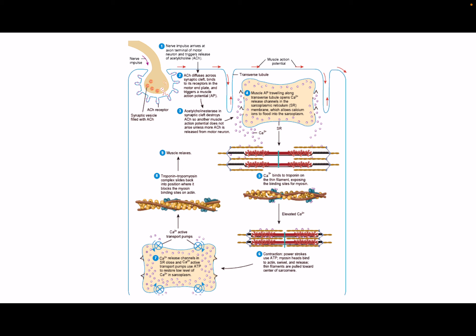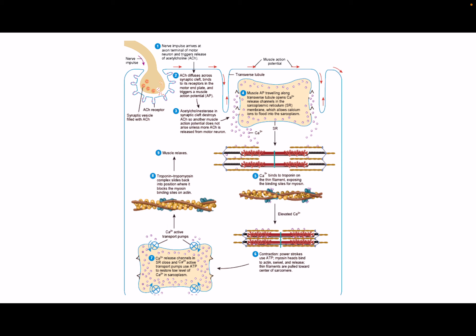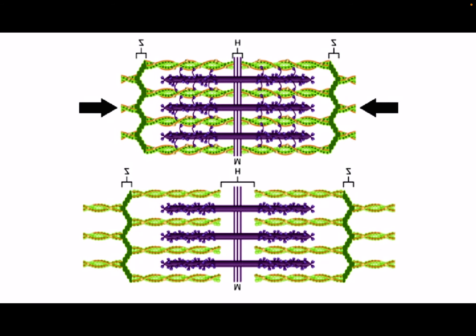We then go through something called the power stroke. Looking at the picture, the bottom would be relaxed and at the top you see contracted. Notice that when we contract, the H zone basically disappears because the actin is being pulled towards the M-line.